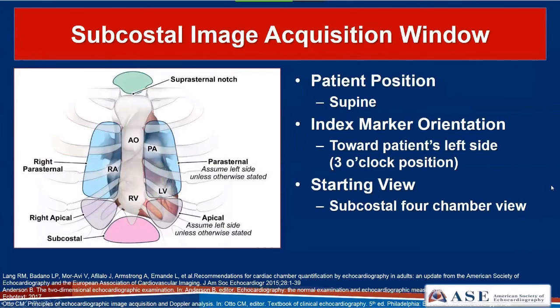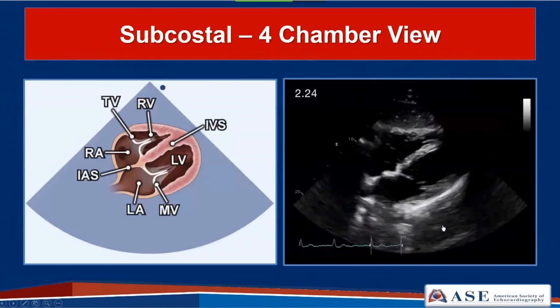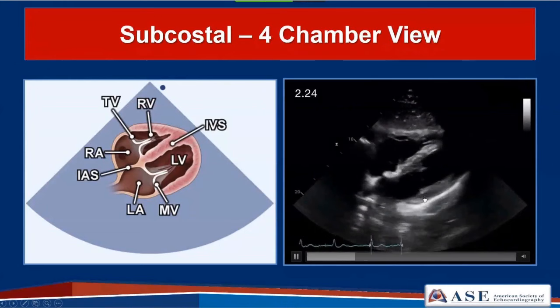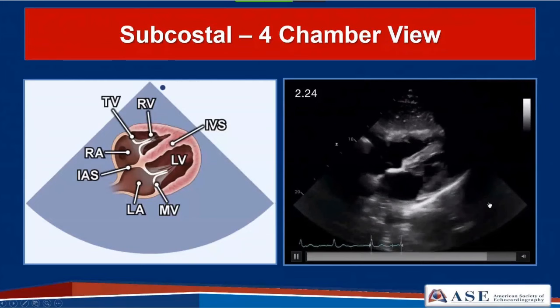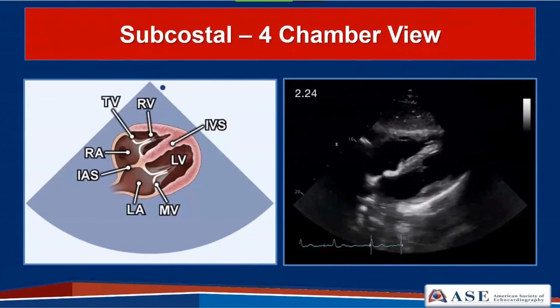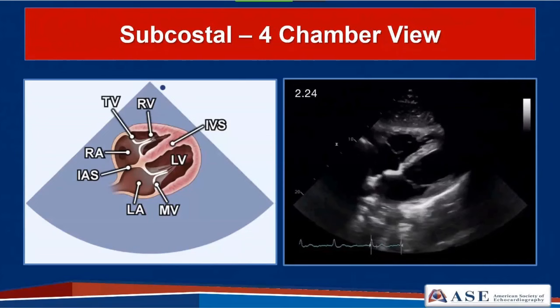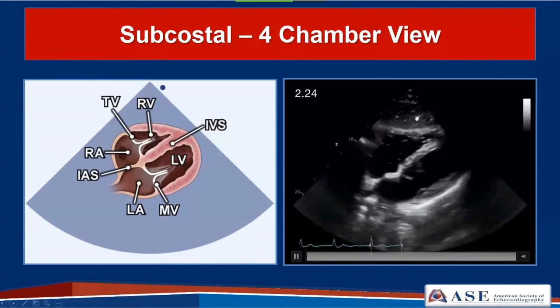Next is the subcostal view. The patient is rolled into a supine position with the index marker pointed towards the patient's left side at the three o'clock position. The starting view is the subcostal four-chamber view showing the left atrium, mitral valve, left ventricle, right atrium, tricuspid valve, and right ventricle. A tip: if the patient tenses against you while pushing on the abdomen, have them bend their knees up to relax the abdominal muscles. Another tip is to slide more rightward and use more of the liver as a window.